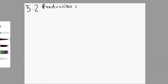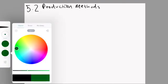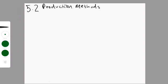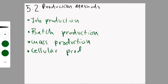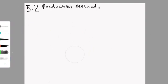So now we're moving on to 5.2, which is about production methods. There are four different production methods: job production, also called customized production; batch production; mass production, which might also be called flow production or process production or line production - mass production is an umbrella term and the other ones are more specific; and then there's cellular production.